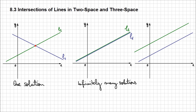The only other relation in two-space is that the lines are parallel, meaning they never intersect. If you solve the system of equations for these two lines, it's going to result in no solution — something like 0x equals 7, or 0y equals 5. No value of x will ever satisfy that equation, because the lines are parallel and never intersect.